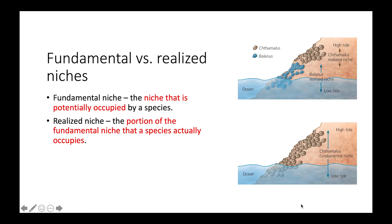For example, we have these two organisms, Thamelis and Balanus. When those two organisms are coexisting on the same rock face, we find Thamelis in the high tide region and Balanus at the low tide region. That would be their realized niche because that's where they're actually found.